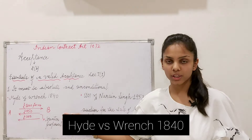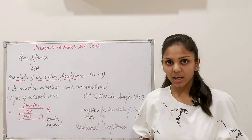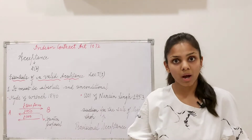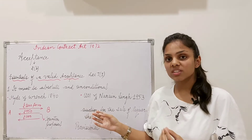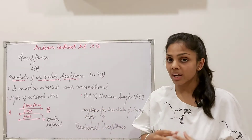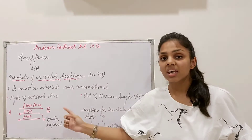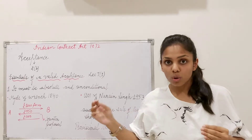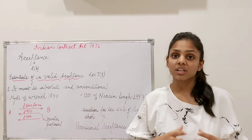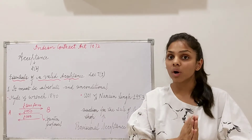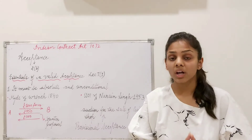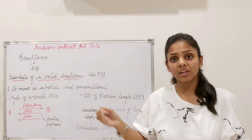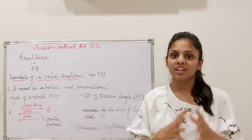In this case, A made a proposal to B that he wished to sell his farm worth 1000 pounds. B said he was willing to purchase the farm, but not for 1000 pounds — instead he would purchase it for 950 pounds. A never gave acceptance to this proposal by B.